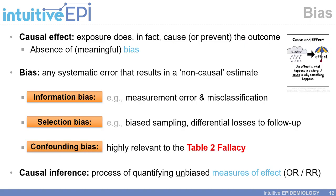When estimating odds ratios or risk ratios, we must think about the idea of a causal effect — where that measure of effect represents a causal effect if the exposure does in fact cause or prevent the outcome. Bias refers to any systematic error resulting in a non-causal estimate, and it can be broadly broken down into information bias, selection bias, and confounding bias. We will focus on confounding bias in this video series, as it is highly relevant to the Table 2 Fallacy.